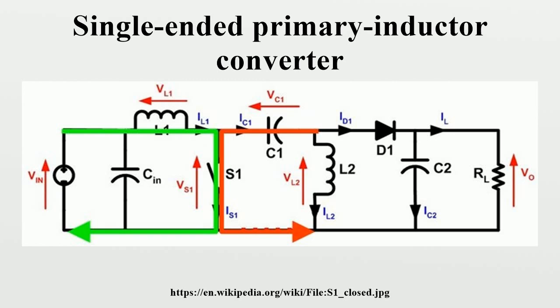When switch S1 is turned off, the current IC1 becomes the same as the current IL1. Since inductors do not allow instantaneous changes in current, the current IL2 will continue in the negative direction. In fact, it never reverses direction.